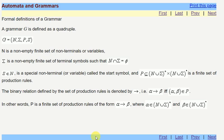There are formal definitions of a grammar. A grammar G is defined as a quadruple, which is a set of these four tuples: N, Epsilon, P, and S.